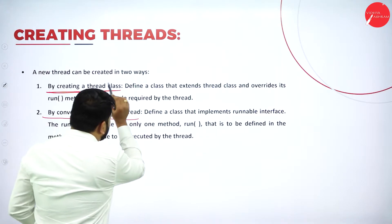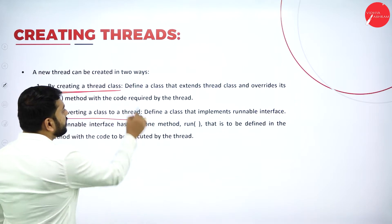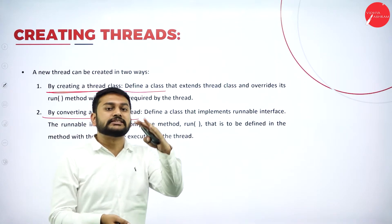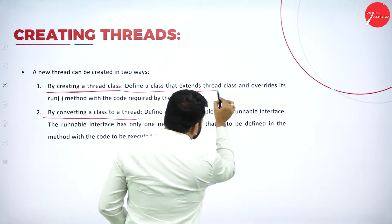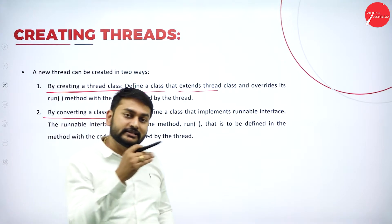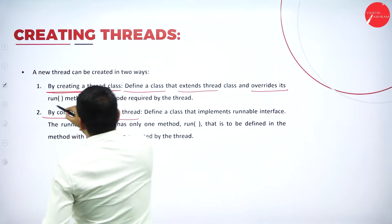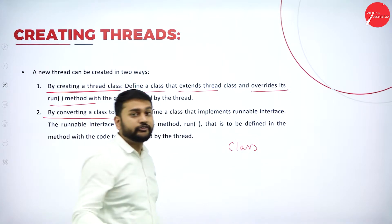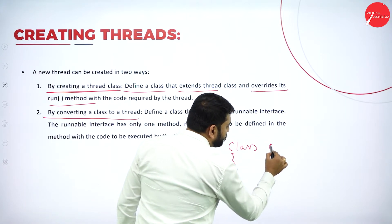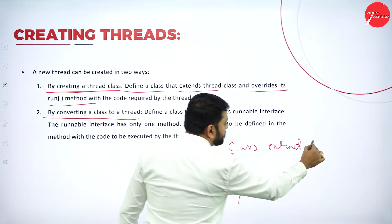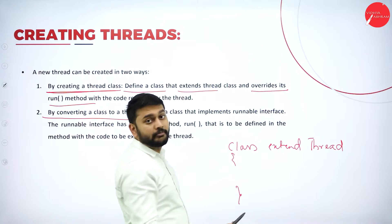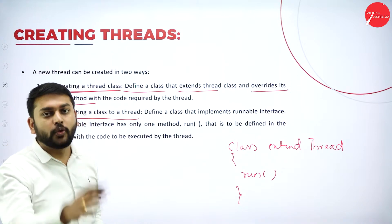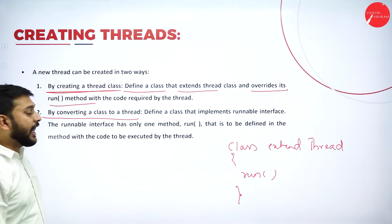For the first method — creating a thread by extending the Thread class — you define a class, then extend the Thread class, and override its run() method. Once you have created a class and extended it to the Thread class, you override the run() method, and only then will you be able to create the thread.